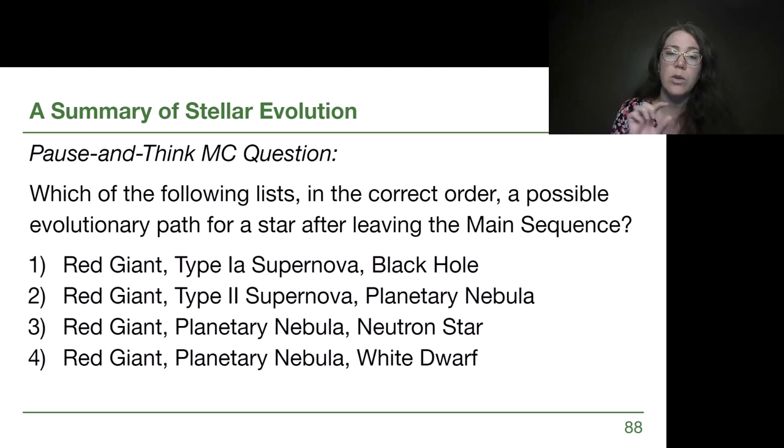For the first one, we have to start to understand the difference between the supernova types. A type 1a, the first one we learned about, the first one that astronomers discovered, is when a white dwarf goes past its mass limit. That is not consistent with the type of supernova that makes a black hole. For option 2, a type 2 supernova is a core collapse supernova, but it would leave behind a stellar remnant consistent with a core collapse star. That would be a neutron star or a black hole. Planetary nebula is not going to be our answer there. We're not going to have two separate events for where the outer layers go.